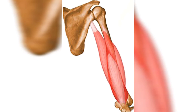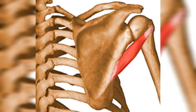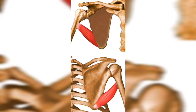Triceps is the chief extensor of the forearm; the long head steadies the head of the abducted humerus. Teres minor laterally rotates the arm and helps to hold the humeral head in the glenoid cavity of the scapula. Teres major adducts and medially rotates the arm.